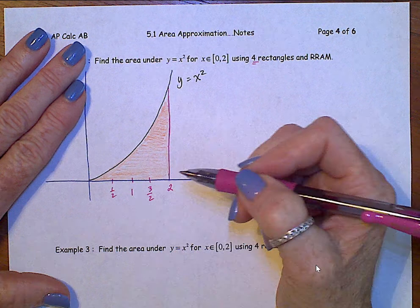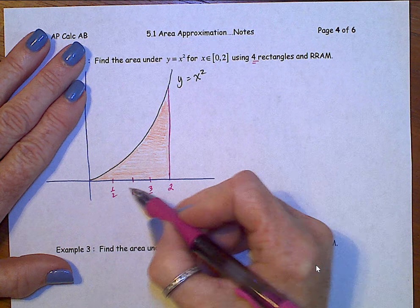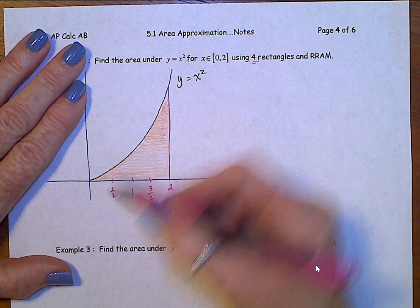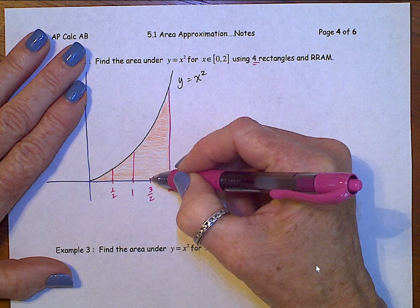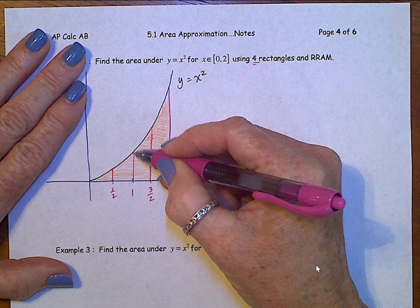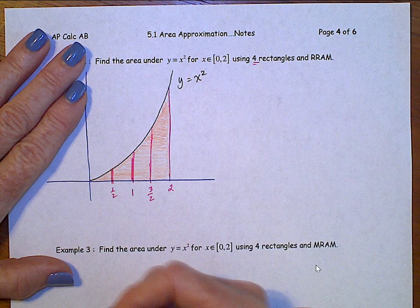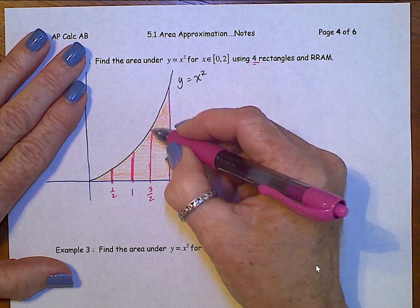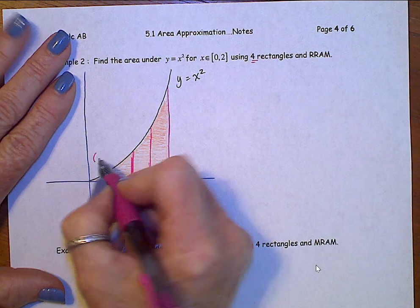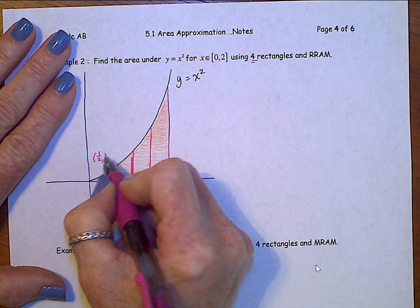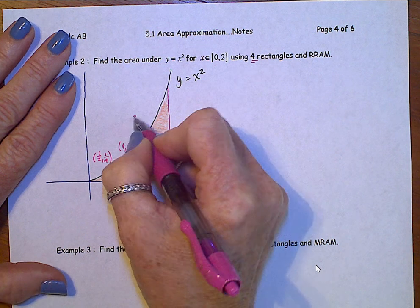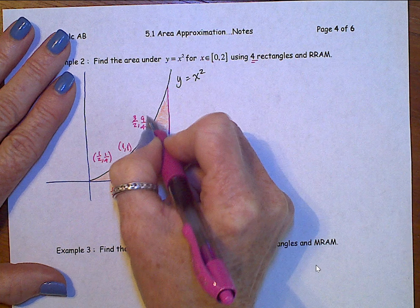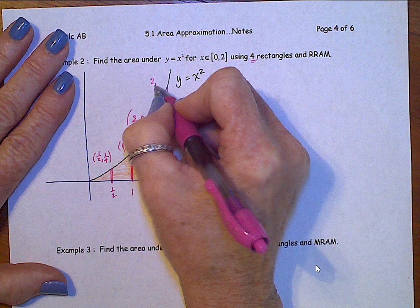And as last time, just like before, when we have the 4 sections, the 4 rectangles, we're going to take those dividing lines and we're going to line those up. Let's list these points again so you can see them. 1 half, 1 fourth, 1 one, 3 halves, 9 fourths, and 2 four.